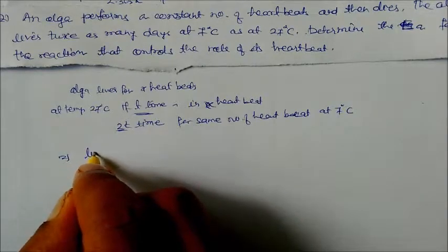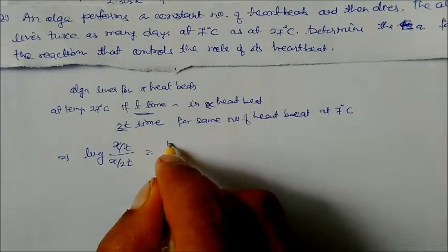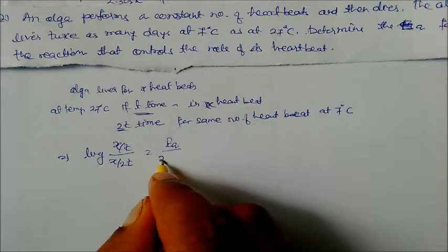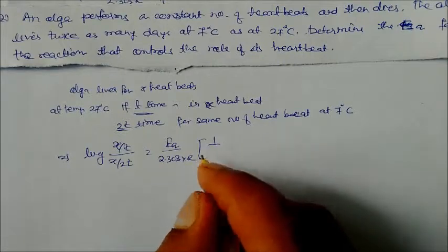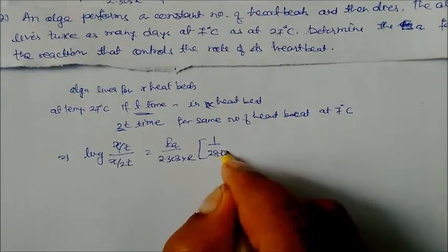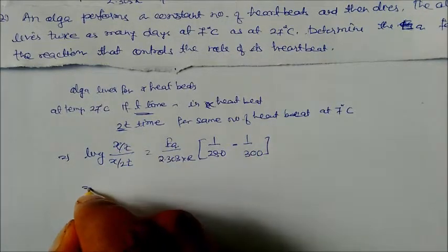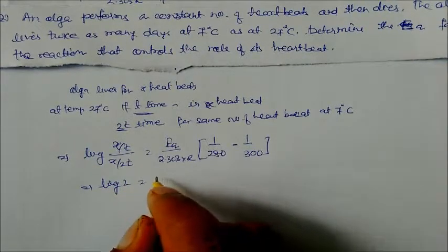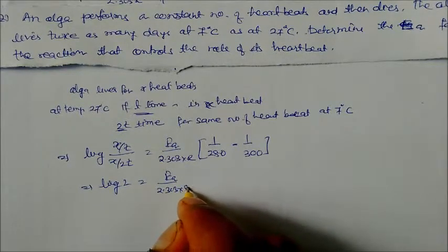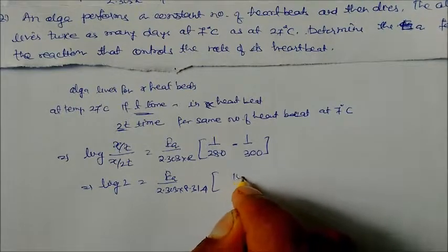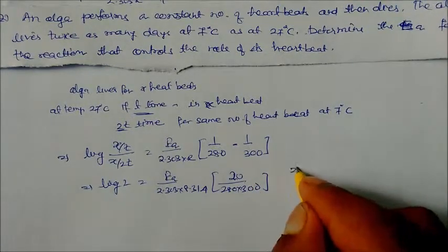We write log(x/t) divided by log(x/2t), which equals EA divided by 2.303R, with the two temperatures 280 K and 300 K. The x cancels, giving log 2 on the left side. So EA equals 2.303 × 8.314 × (20 divided by 280 × 300).